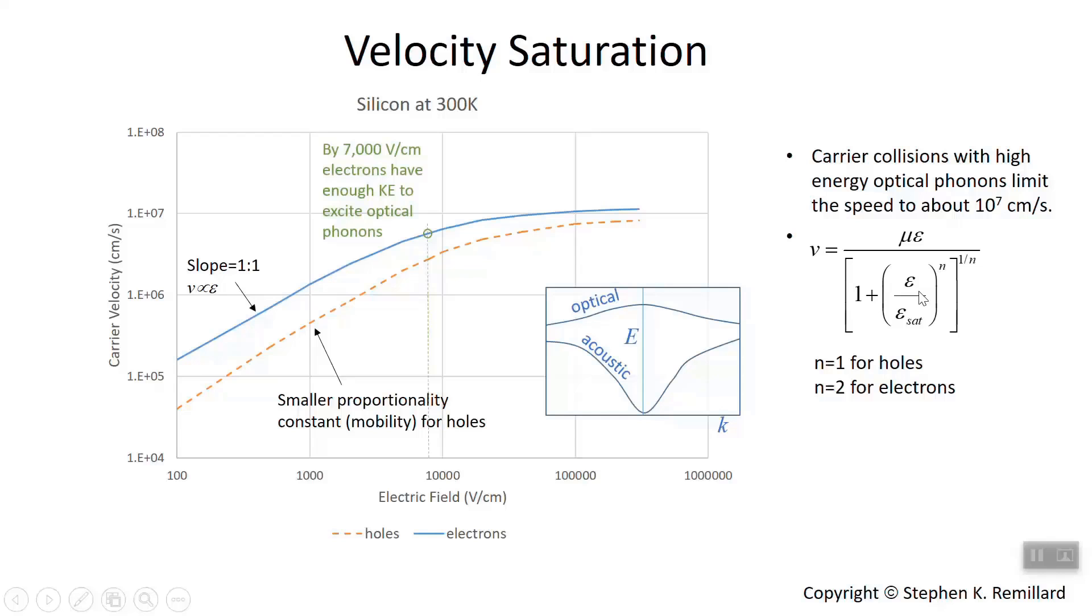The denominator becomes E over E saturation. This E_sat is just a constant. And the exponents cancel. The velocity becomes mu times E_sat, which is a constant, at high electric field. And so the velocity becomes a constant, equal to that mu E_sat. The constant, called E_sat, has a physical meaning. It's the electric field.